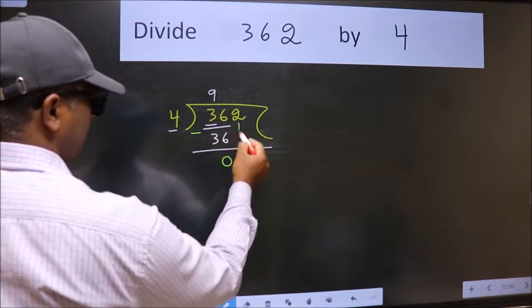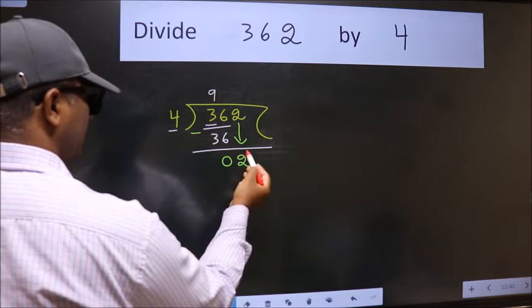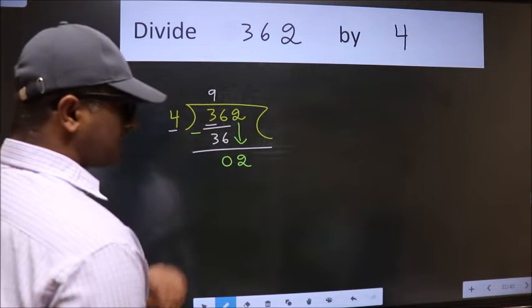After this, bring down the beside number. 2 down. After this step, the mistake happens. And the mistake is this.